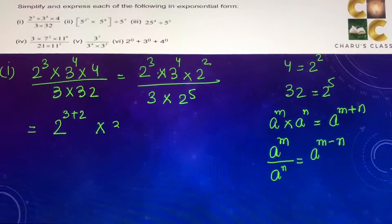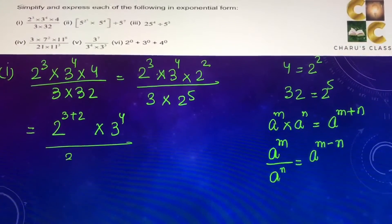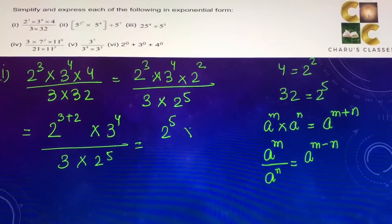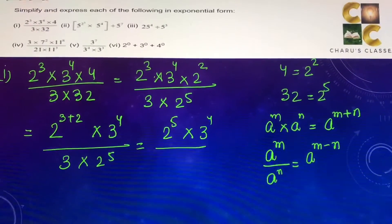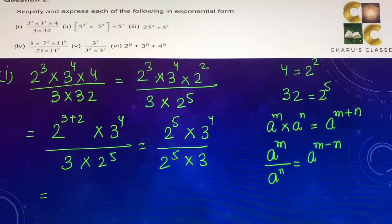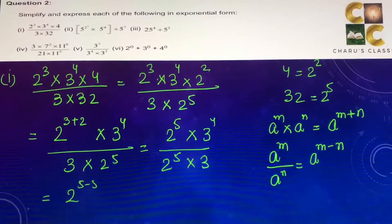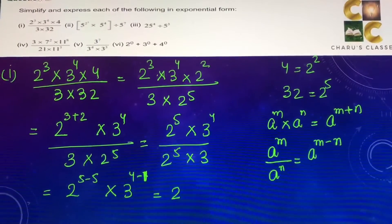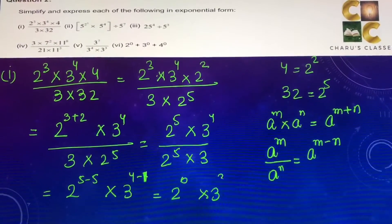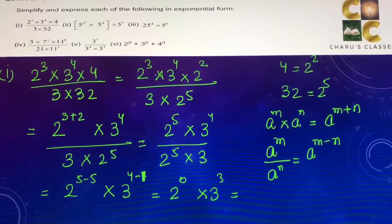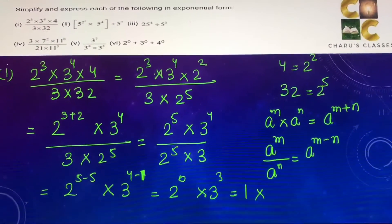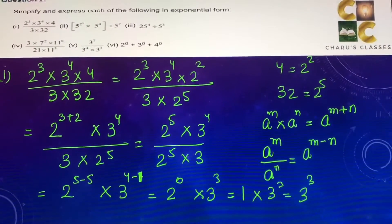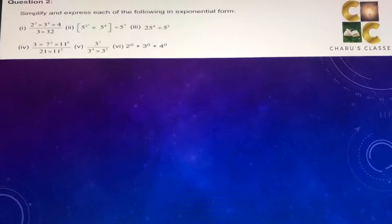So 2 to the power 3 into 2 to the power 2 becomes 2 to the power 3 plus 2, into 3 to the power 4, by 3 into 2 to the power 5. This gives 2 to the power 5 into 3 to the power 4 by 2 to the power 5 into 3, which is 2 to the power 5 minus 5 into 3 to the power 4 minus 1. So 2 to the power 0 — that is 1 — into 3 to the power 3, giving the answer 3 to the power 3.